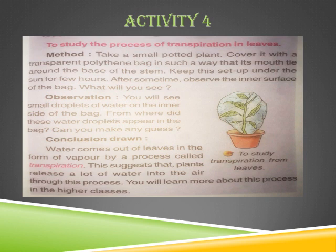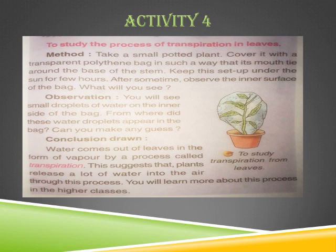After some time, observe the inner surface of the bag. You will see small droplets of water on the inner side of the bag. Note: the polythene bag has not been tied along with the pot — it has been tied at the base of the stem. That is very important. The observation is that water comes out of the leaves in the form of vapor by the process of transpiration, suggesting that plants release a lot of water into the air. Since the bag is tied at the base of the stem, we can understand that the water droplets come from the plant itself.